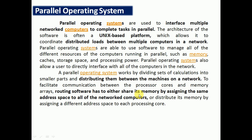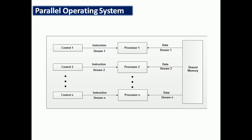Finally, parallel operating systems are used to interface multiple network programs to complete tasks in a parallel manner. They are mostly used in networking, where a number of processors execute each process and share the same memory. Thank you, and subscribe to our channel Logic Computer Institute for more videos.